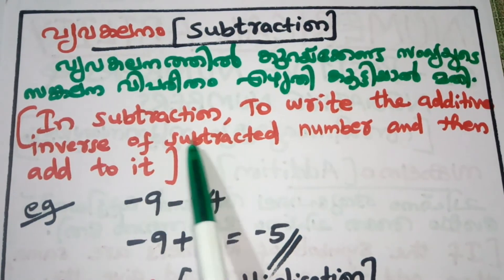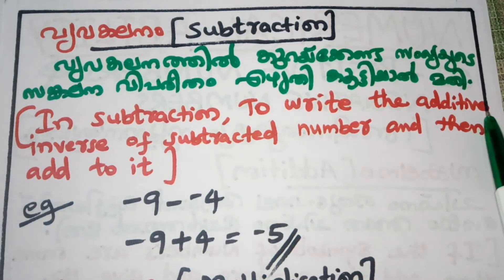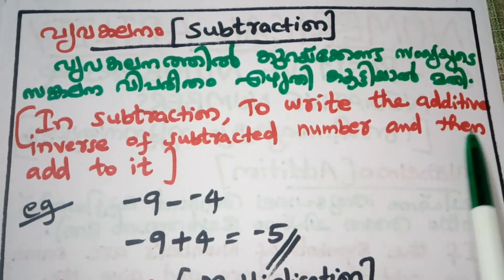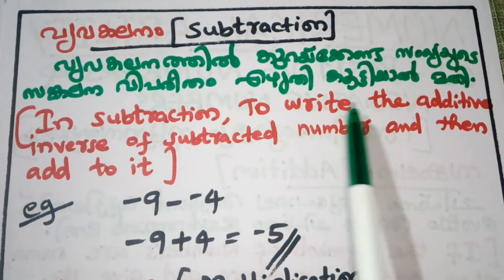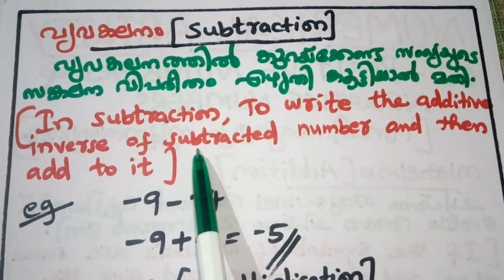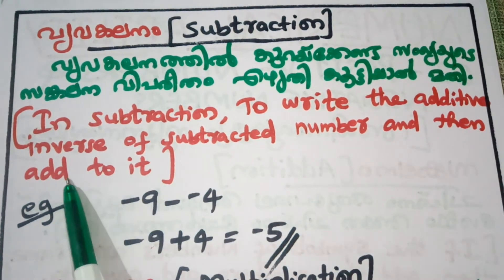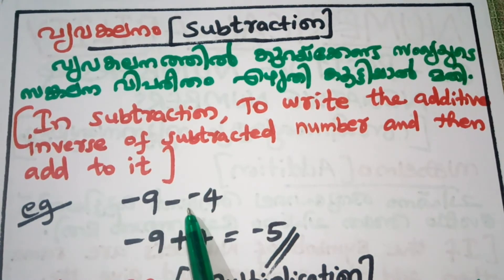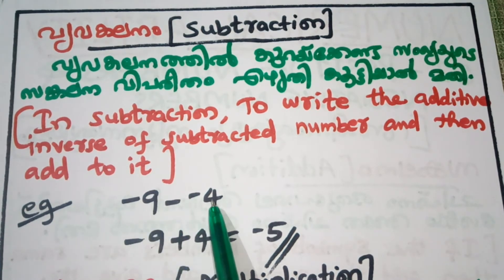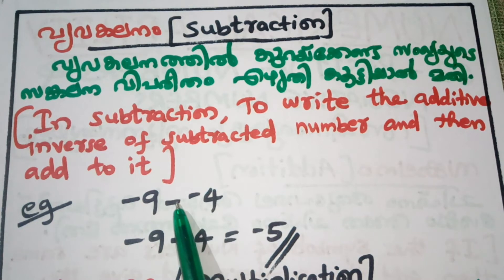In subtraction, write the additive inverse of the subtracted number and then add. For example, if you have a subtraction with a negative number, convert it using the additive inverse and then apply the addition rules — you can draw this as a positive 4.